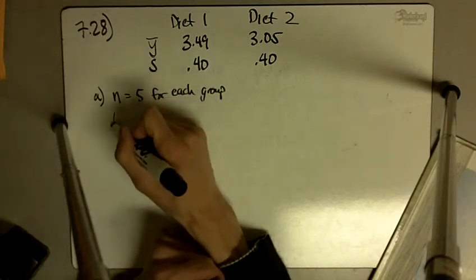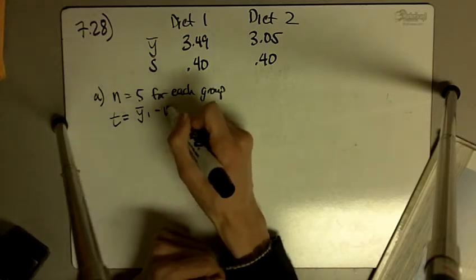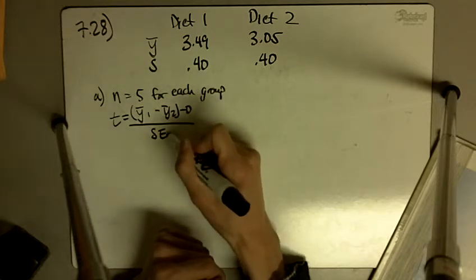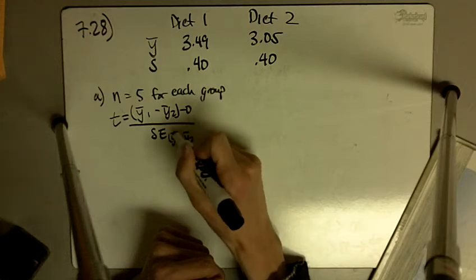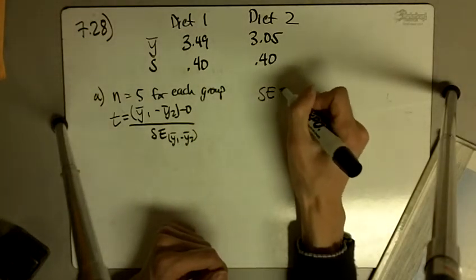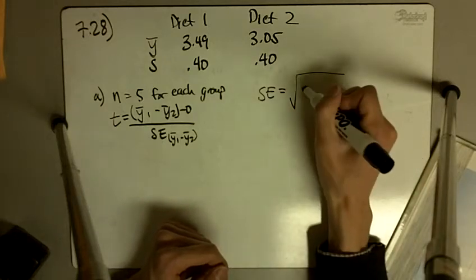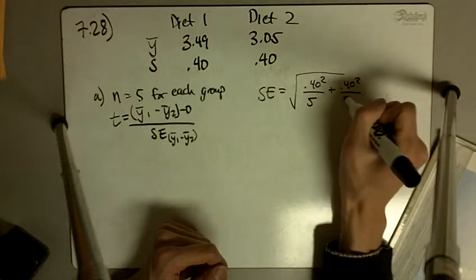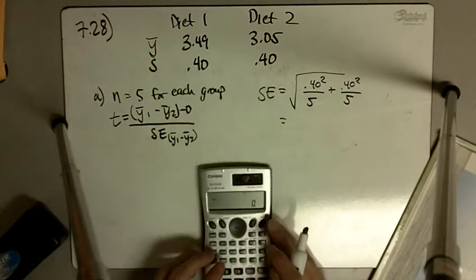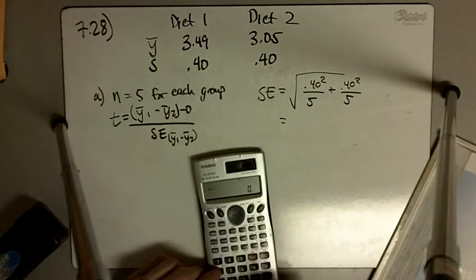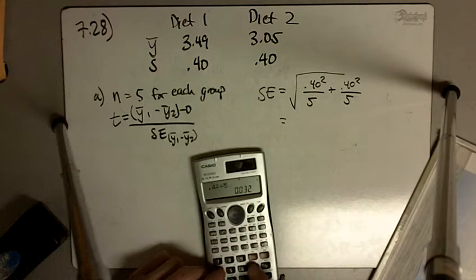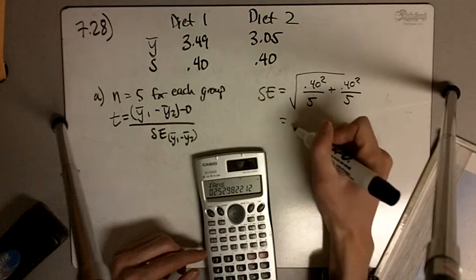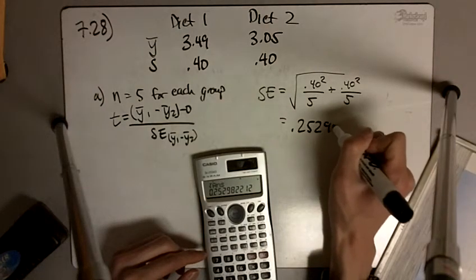So we know our t-statistic is given by y-bar 1 minus y-bar 2 minus 0 over our standard error, the standard error of the difference here. So let's figure out what our standard error is. In this case, it's going to be 0.40 squared over 5 plus 0.40 squared over 5. We're going to take the square root of that. So I'm getting 0.25298.